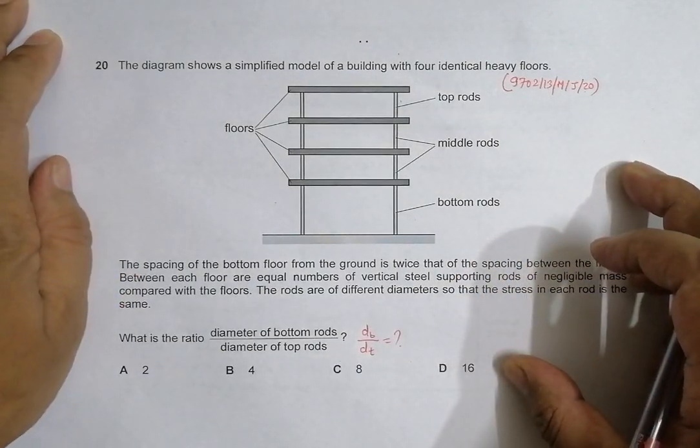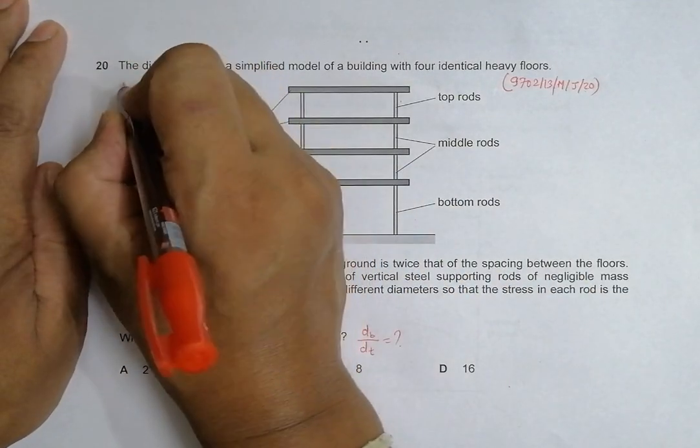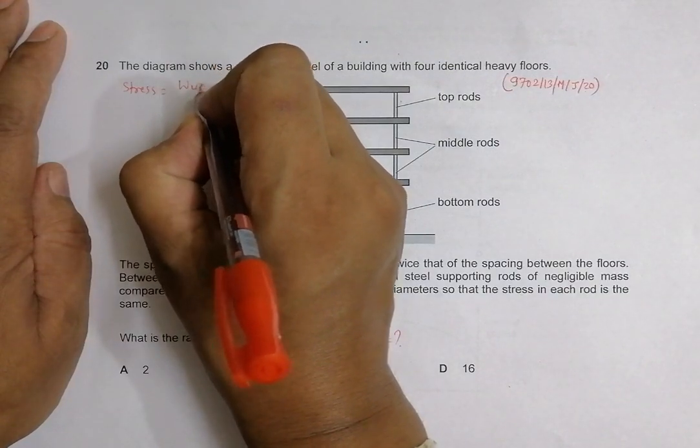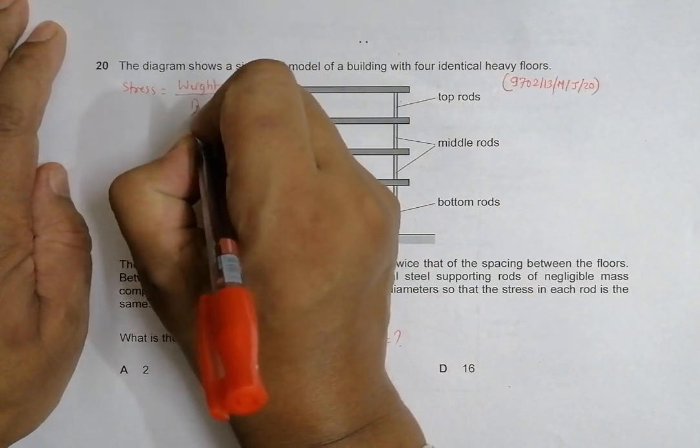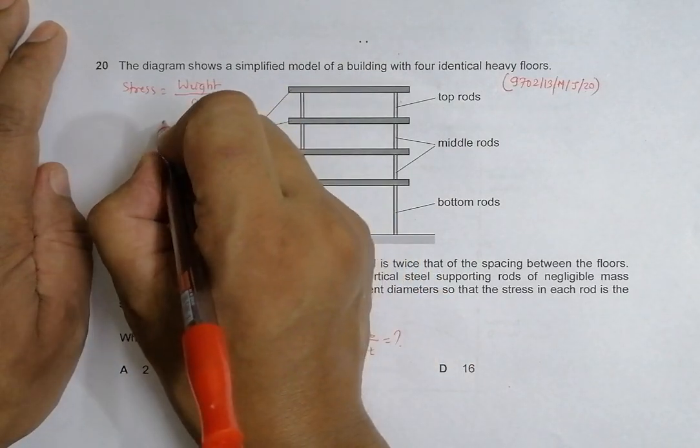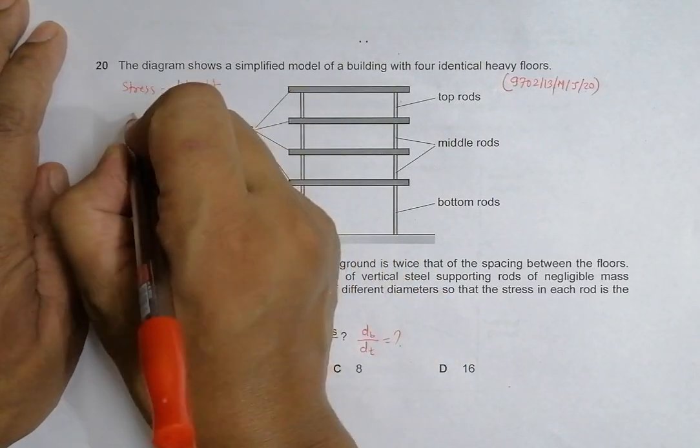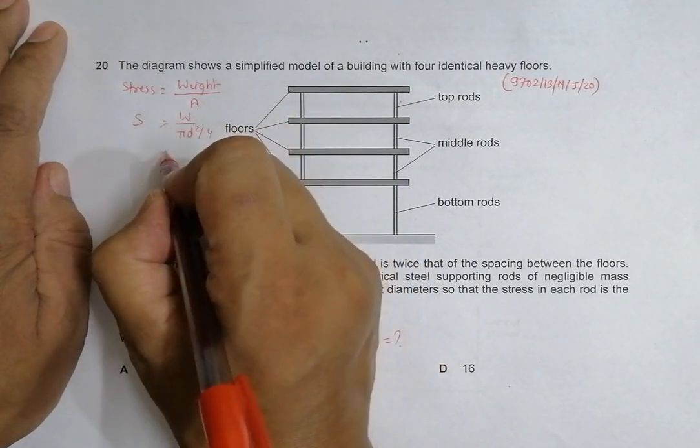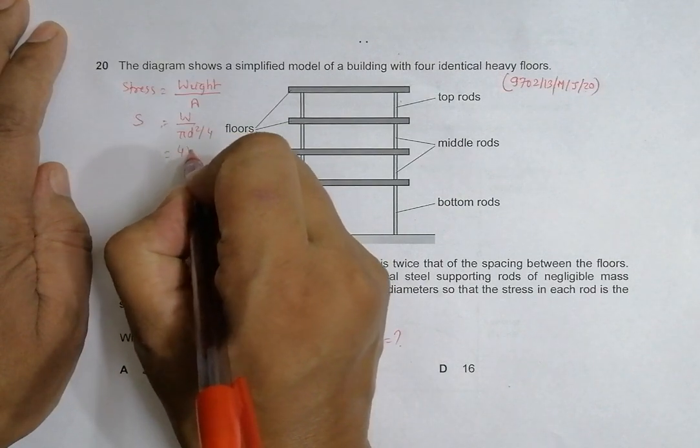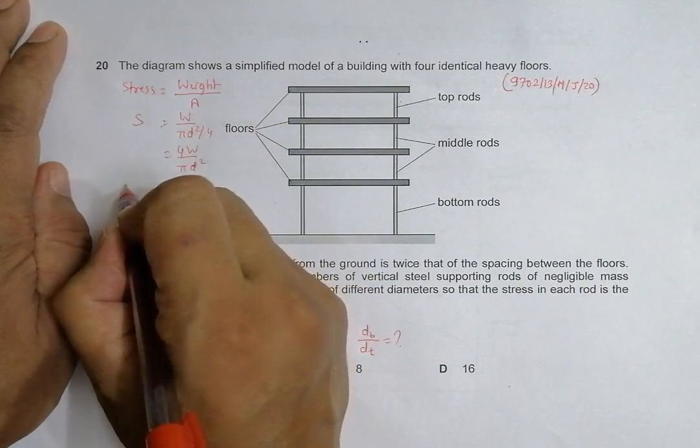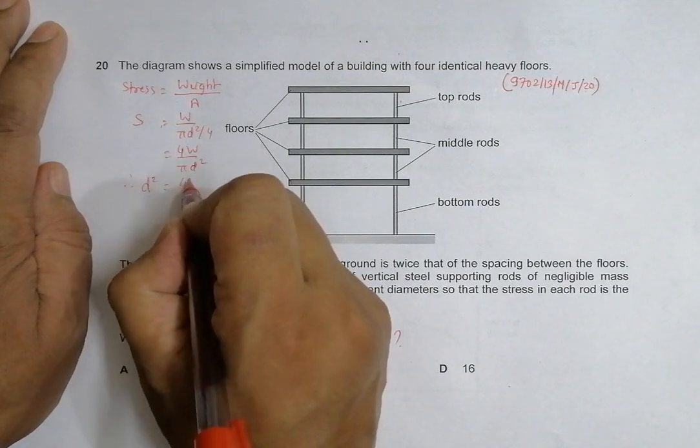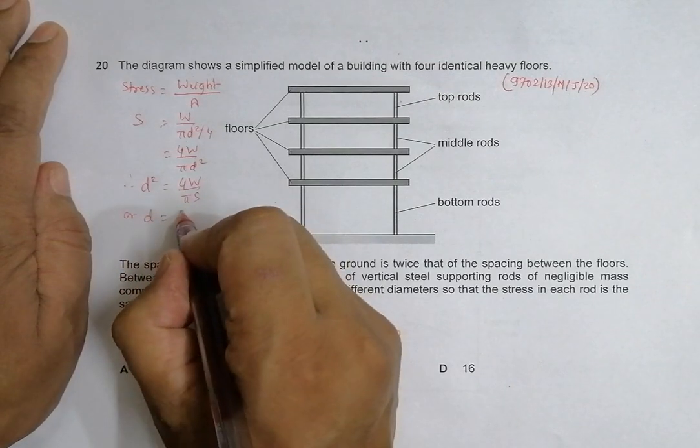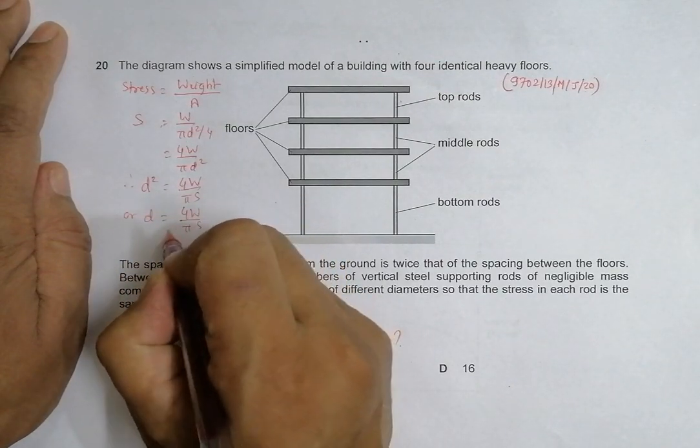Let us relate the weight and stress with the diameter. Stress equals weight divided by cross-sectional area. So stress equals W divided by π D² over 4, which equals 4W divided by π D². This gives us D² equals 4W divided by π S, or D equals the square root of 4W divided by π S.